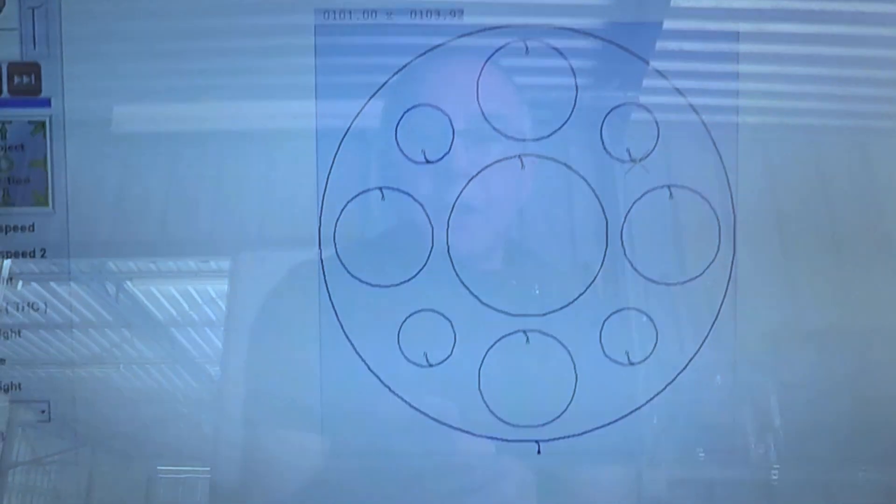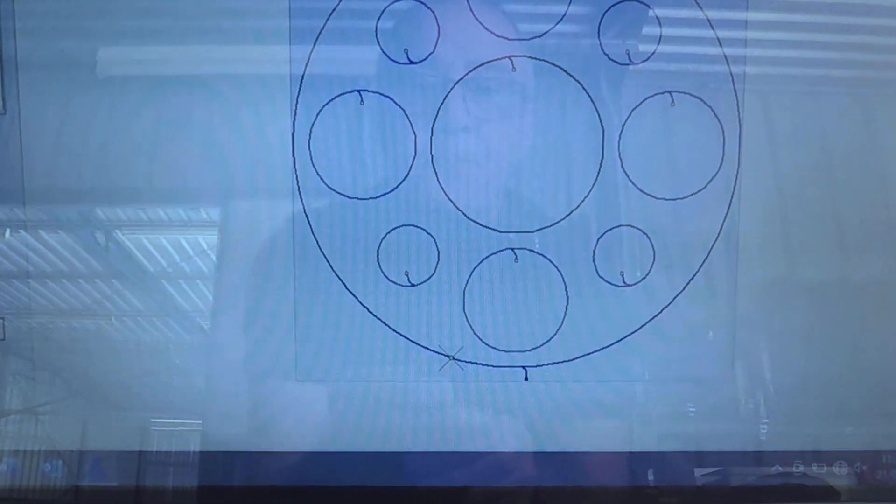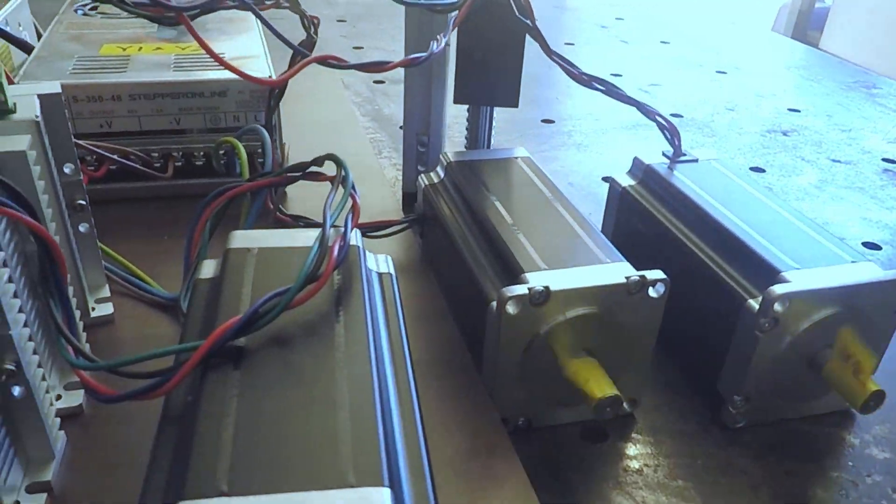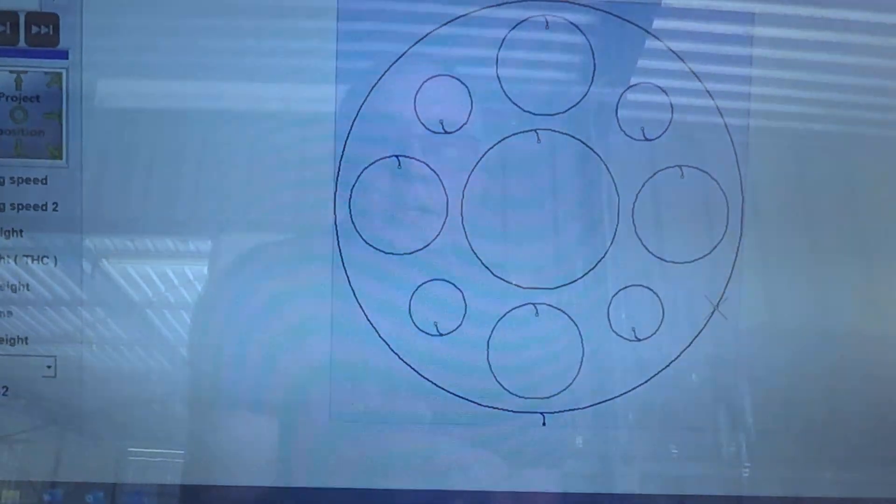Then what it'll do now is it'll go down to the bottom and cut the whole circle out. While it's doing that these motors are responding to that. When it finishes the torch will just park itself. That's finished.